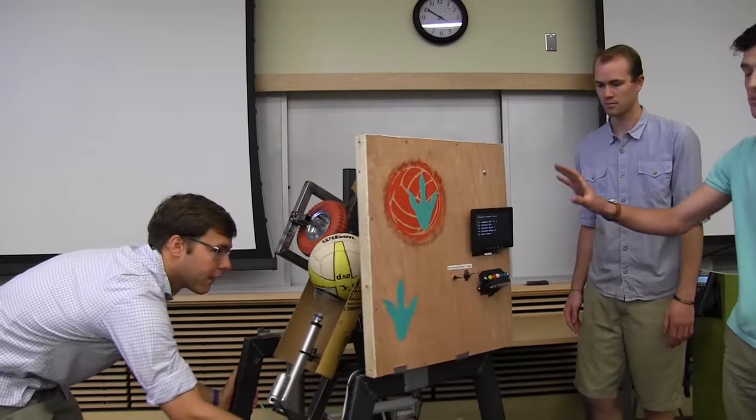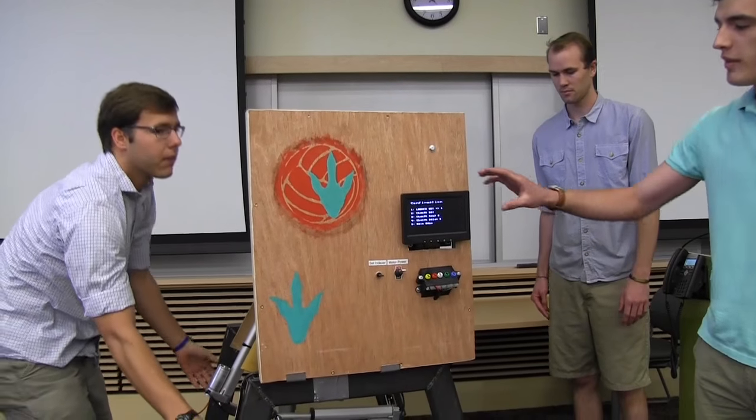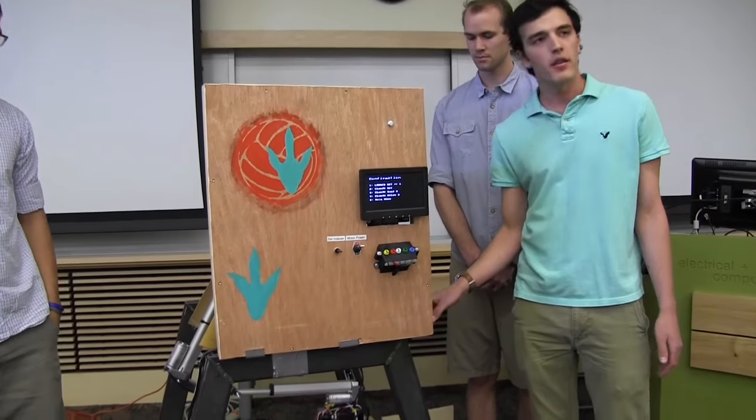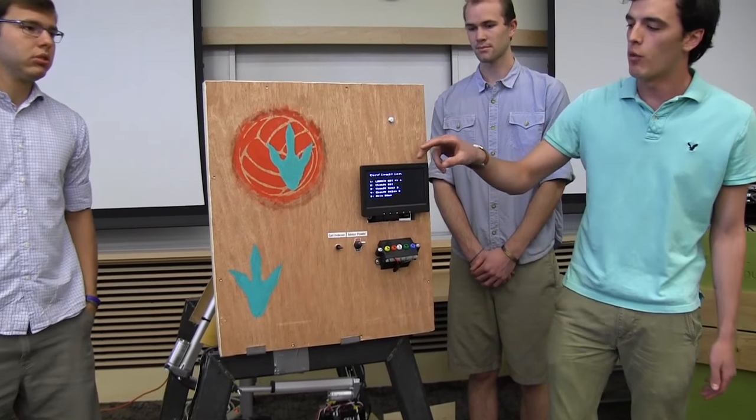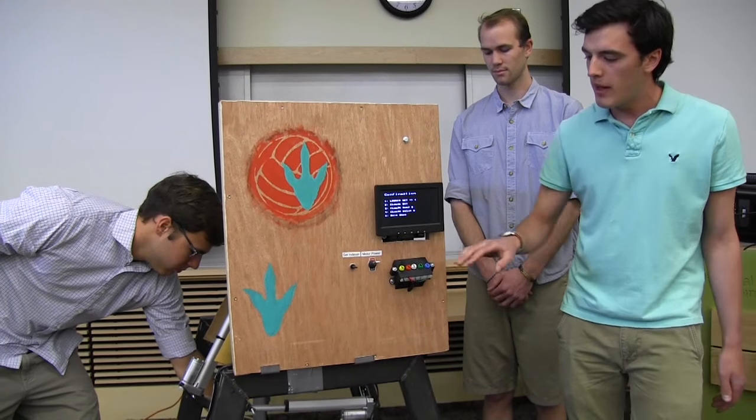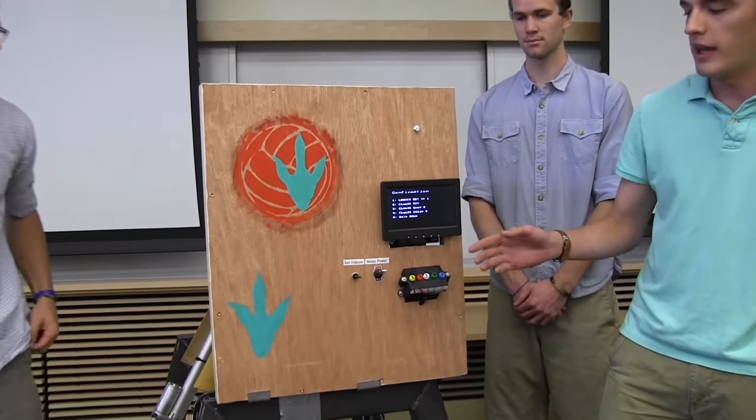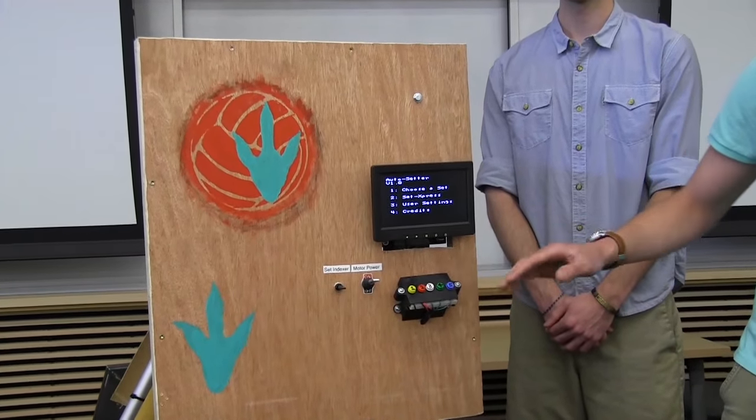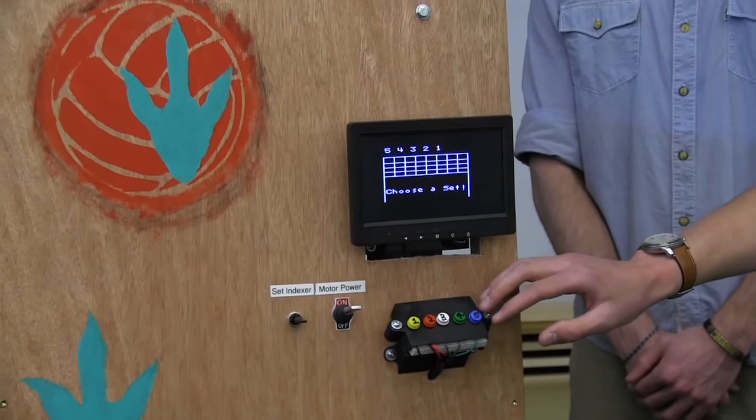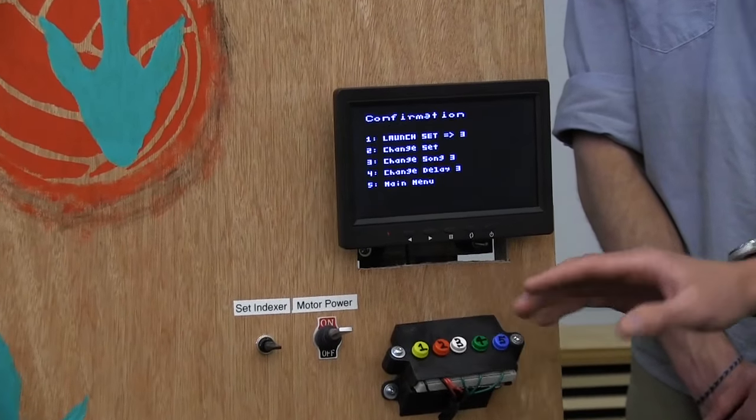The first thing that you see is this main user interface, and what this is is an NTSC TV, and it's run by an Arduino Mega that we had to use because it needs a lot of RAM. The entire user interface as a whole is run off of that Arduino Mega, and there is a button controller here that allows you to index through the menu screen. There's a few different options. It lets you choose a set manually, which then you can index through and choose.